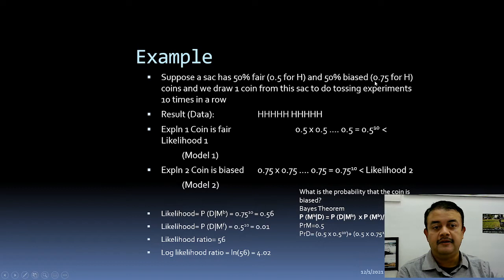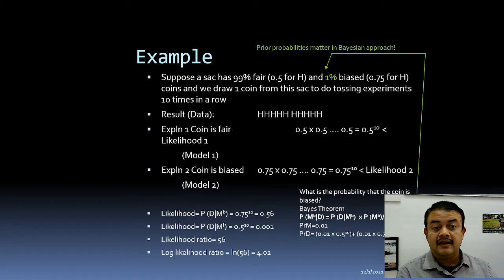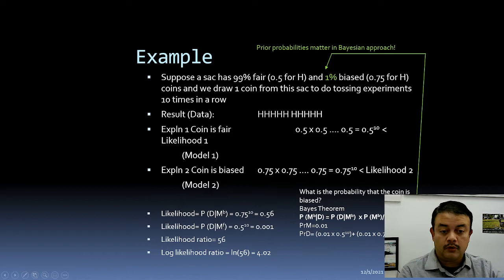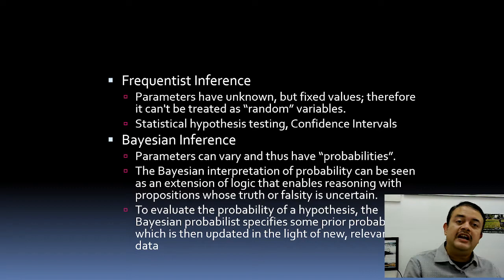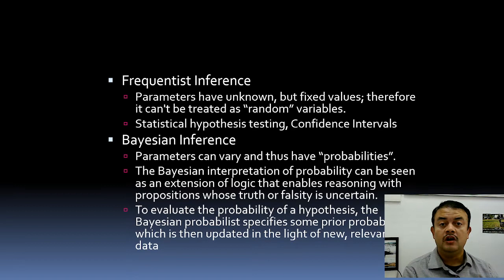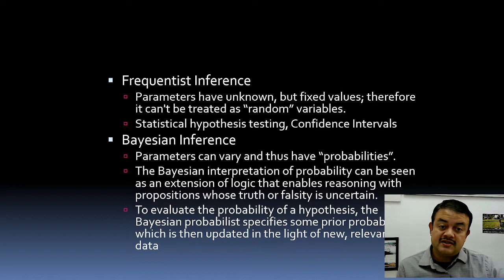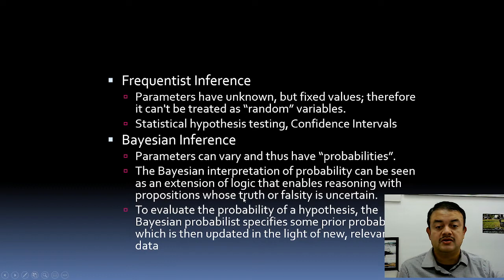This illustrates how Bayesian inference depends on the prior estimate — the initial probability matters. In frequentist statistics, parameters are fixed; hypothesis testing and confidence intervals are frequentist tools. In Bayesian inference, you estimate topology, branch lengths, and mutation rates by making initial guesses of parameter values and refining them in light of new evidence. The prior becomes the posterior, and the posterior becomes the new prior — iteratively refined.